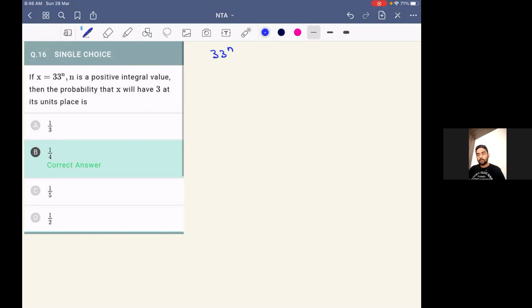Like for example, if I talk about 3 power n, 3 power n will have last digit either as 3, 1, 9, or 7. It will keep on repeating after itself.